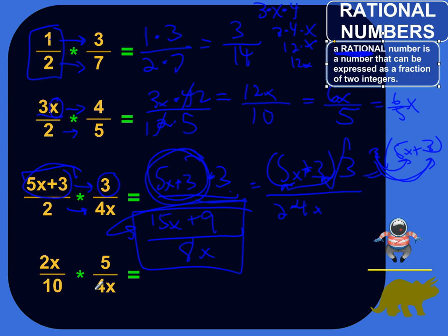All right, last one, going back to simple land again, after the mind stretching number three here. So straight across, 2x times 5, so 2x times 5. Remember that you can think of that as 2 times x times 5, over 10 times 4x.